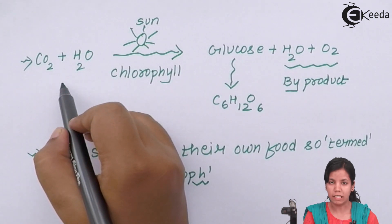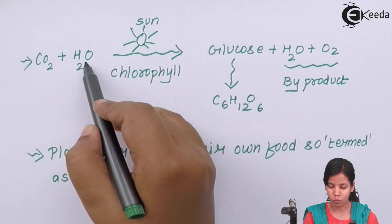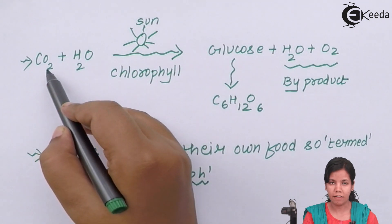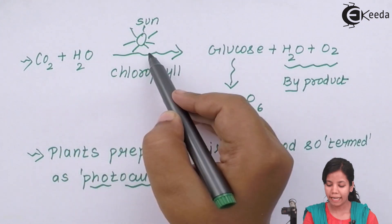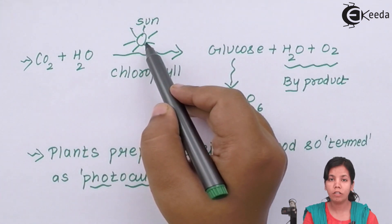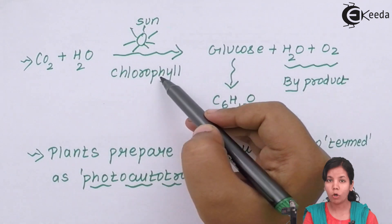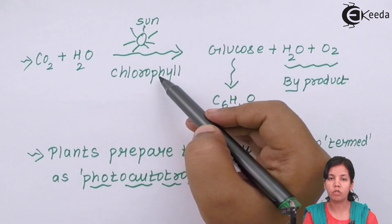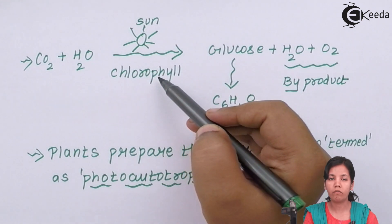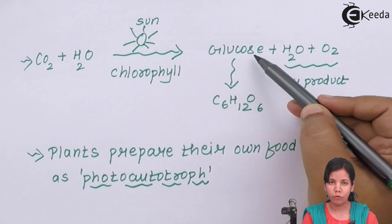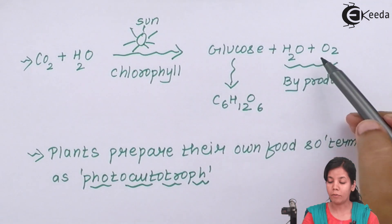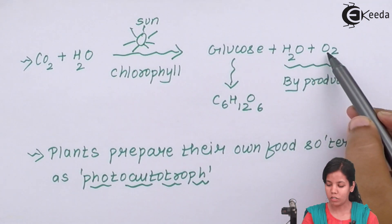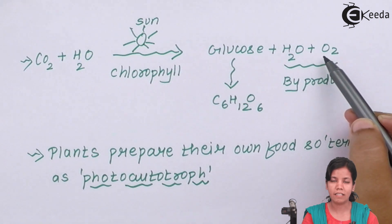The inputs for photosynthesis are carbon dioxide plus H₂O, which the plants get from the atmosphere. In the presence of sunlight — energy in the form of photons — and chlorophyll or chloroplast present inside the leaf, the plant prepares its food: glucose (C₆H₁₂O₆). The byproducts obtained are oxygen and water, and this oxygen is taken in by human beings — which is how balance is observed in nature.